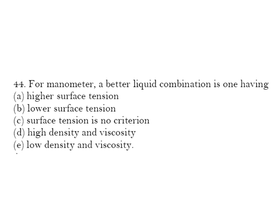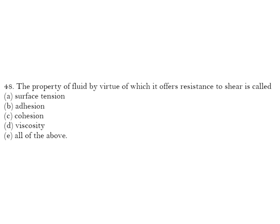For a manometer, a better liquid combination is one having higher surface tension or lower surface tension — but surface tension is not a criteria. The property of a fluid by virtue of its resistance to shear is viscosity, not surface tension. Viscosity offers resistance between two layers of fluid when they move over each other, so D is the correct answer.